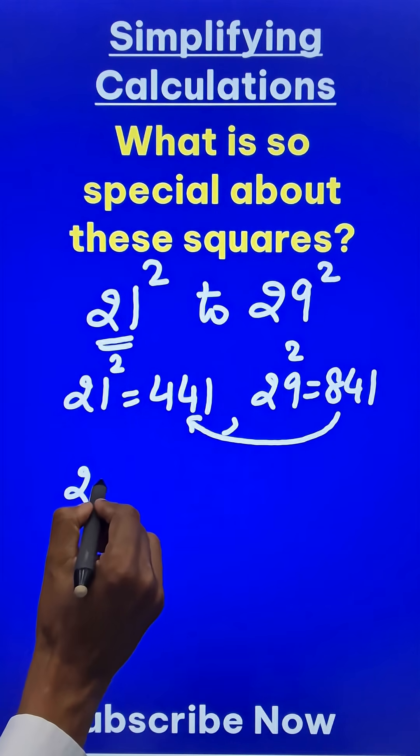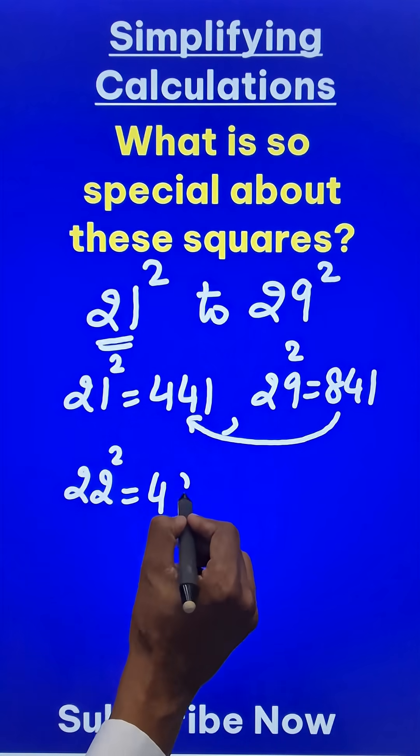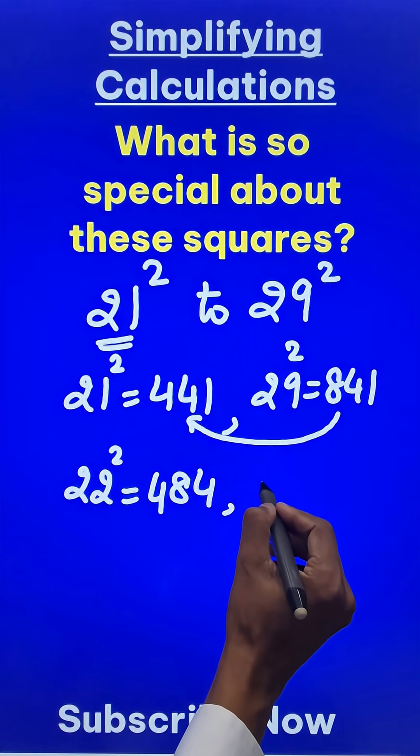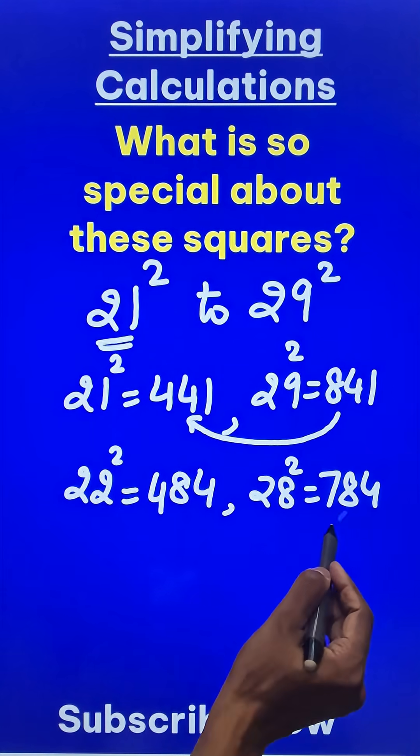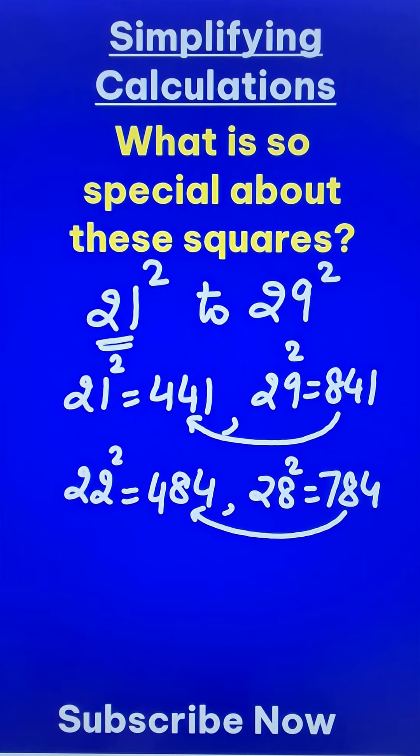Likewise, if you see 22 square, it is 484, and if you see the one before 29, that is 28 square, it is 784. Now what is the pattern? They are exactly 300 apart.